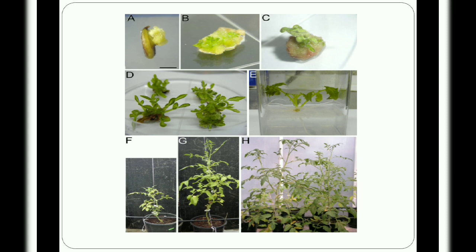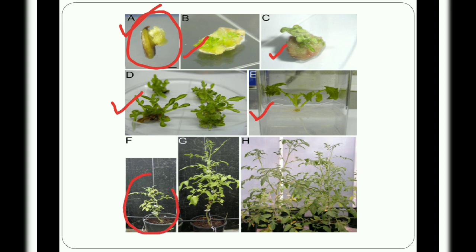These are photographs of the anther culture process. In the photograph, anthers are first grown on basal medium, callus is developed, and from that callus a shoot and root are generated. The plantlets generated are then transferred into solidified MS medium. After 30 days, mature plants are repotted into pots, hardening is done, and the plant is ready for the field.